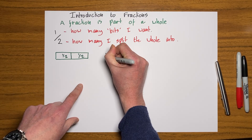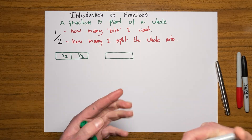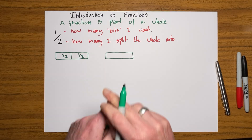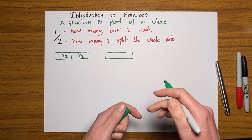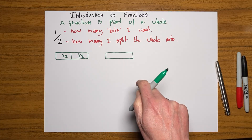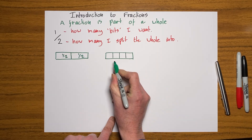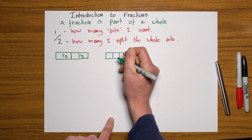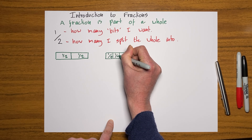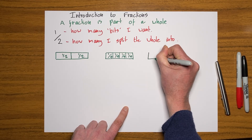Let me do exactly the same with my bar. The sooner you get working with bars the better, because they become so useful in explaining fractions and all sorts of things as we carry on. This bar can represent anything — chocolate, ice cream, whatever you want. But I'm going to split this whole into four. Remember, they must be equal. So now I've split that into four, the bottom number is four, and each one of those is one part out of four, one part out of four, one part out of four, one part out of four.